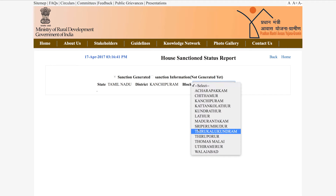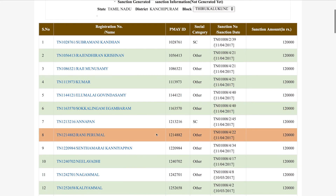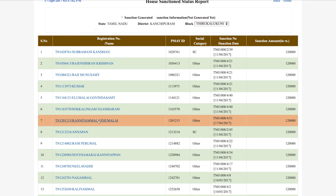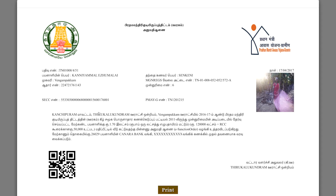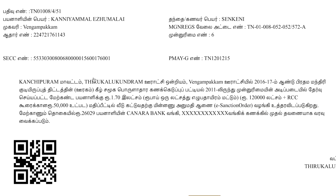Select the Block and the beneficiary's list will be found in the block. You can download the Sanction Letter and the Beneficiary List from the letter. You will have the slide for the beneficiary. The closest financial assistance details include the first installment of the beneficiary details.